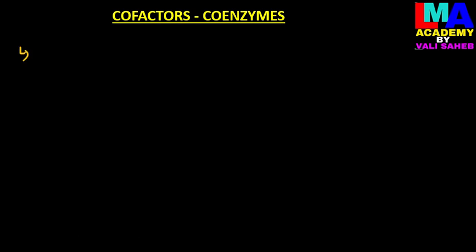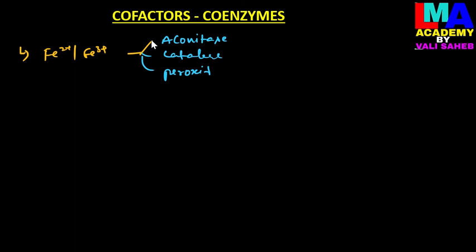Iron (Fe²⁺ or Fe³⁺) is a cofactor which increases the catalytic activity of aconitase, catalase, peroxidase, and cytochrome C oxidase, among others. These are the main enzymes which increase their catalytic activity through the iron cofactor.